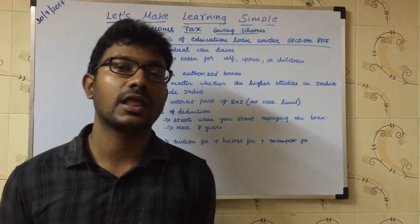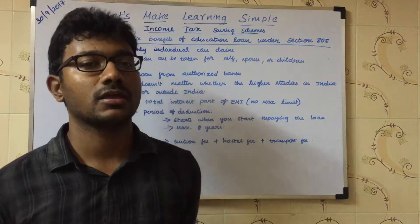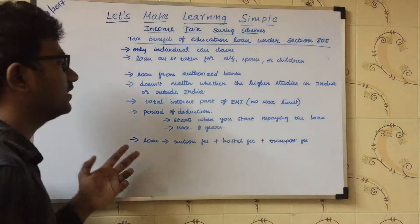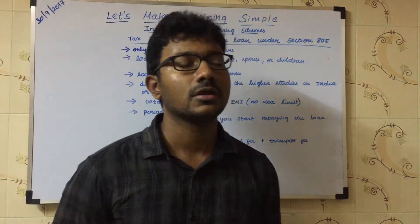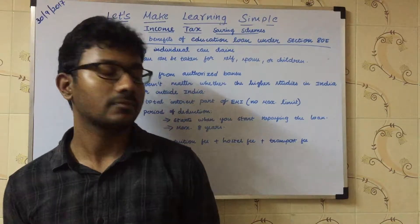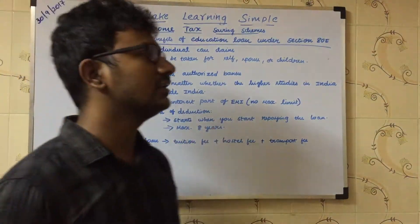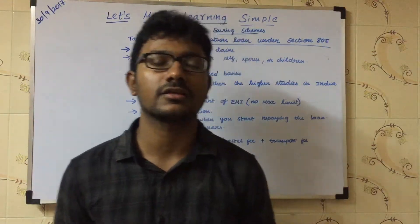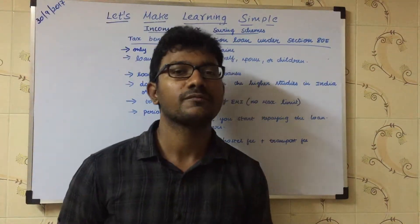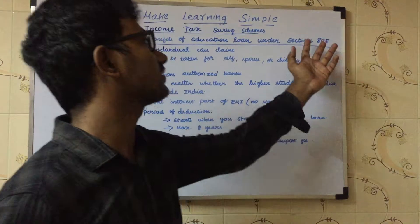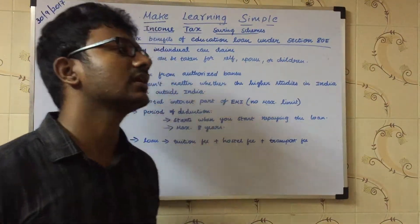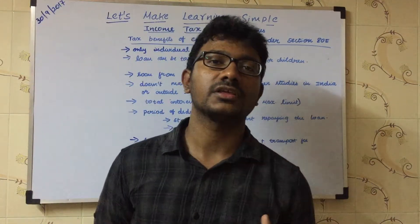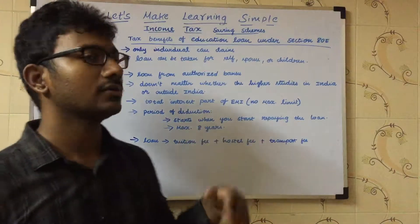If you are paying 1 lakh or 2 lakh rupees as interest per year for an education loan, it is completely tax exempted under Section 80E. Then comes the period of deduction — the maximum period is 8 years. If you are paying interest after 8 years, then that amount is taxable.